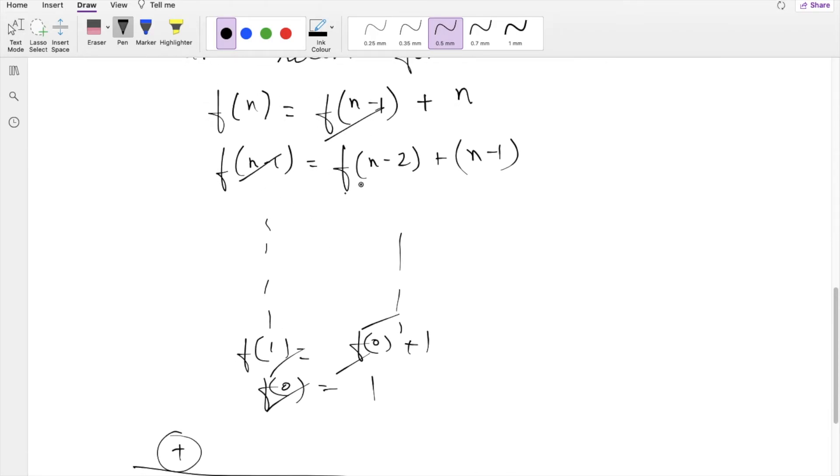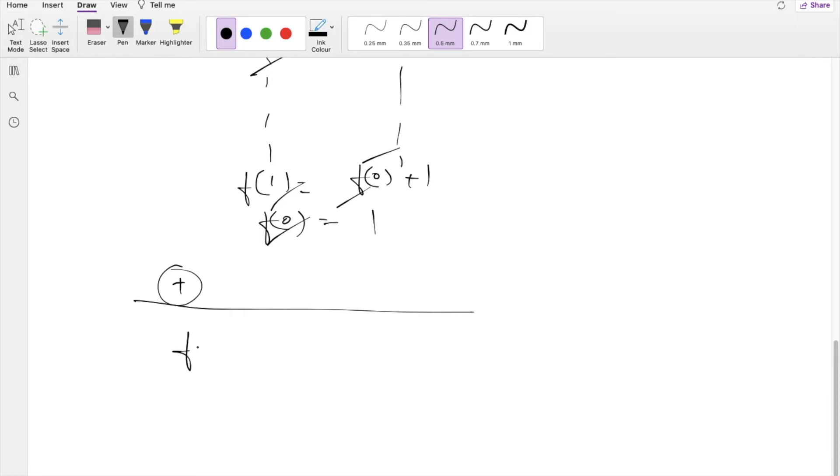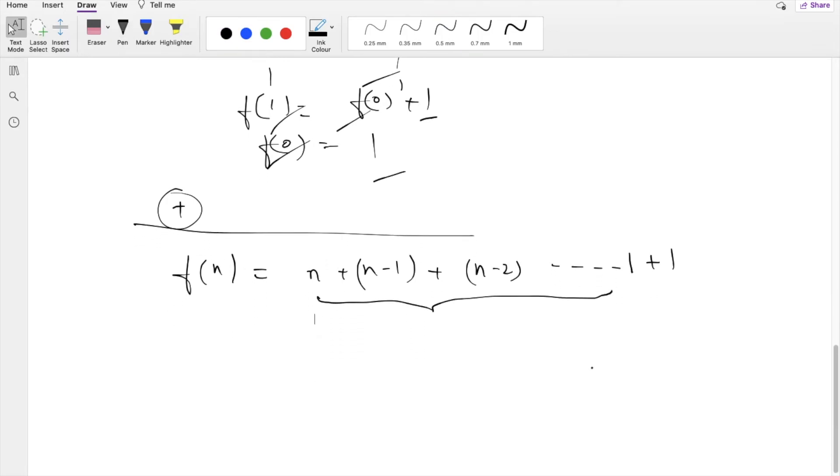Every time terms would get cut, so both the sides will only be left with f(n) would be equal to n + (n-1) + (n-2) and so on + 1 + 1. We have two ones: the first one is this and the second one is this. So this is nothing but an arithmetic progression.